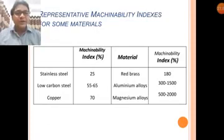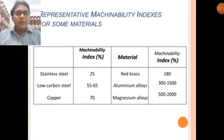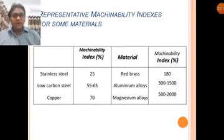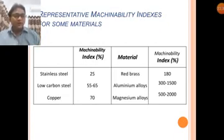Some example machinability index values: stainless steel is 25, low carbon steel is 55 to 65, copper is 70, red brass is 180, aluminum alloy is 300 to 1500, magnesium alloy is 500 to 2000. The higher the machinability index percentage, the softer and smoother the material and the more easily it can be machined. Materials like brass, aluminum, and magnesium are softer compared to steels and coppers, while a lower index means the material is more difficult to cut.